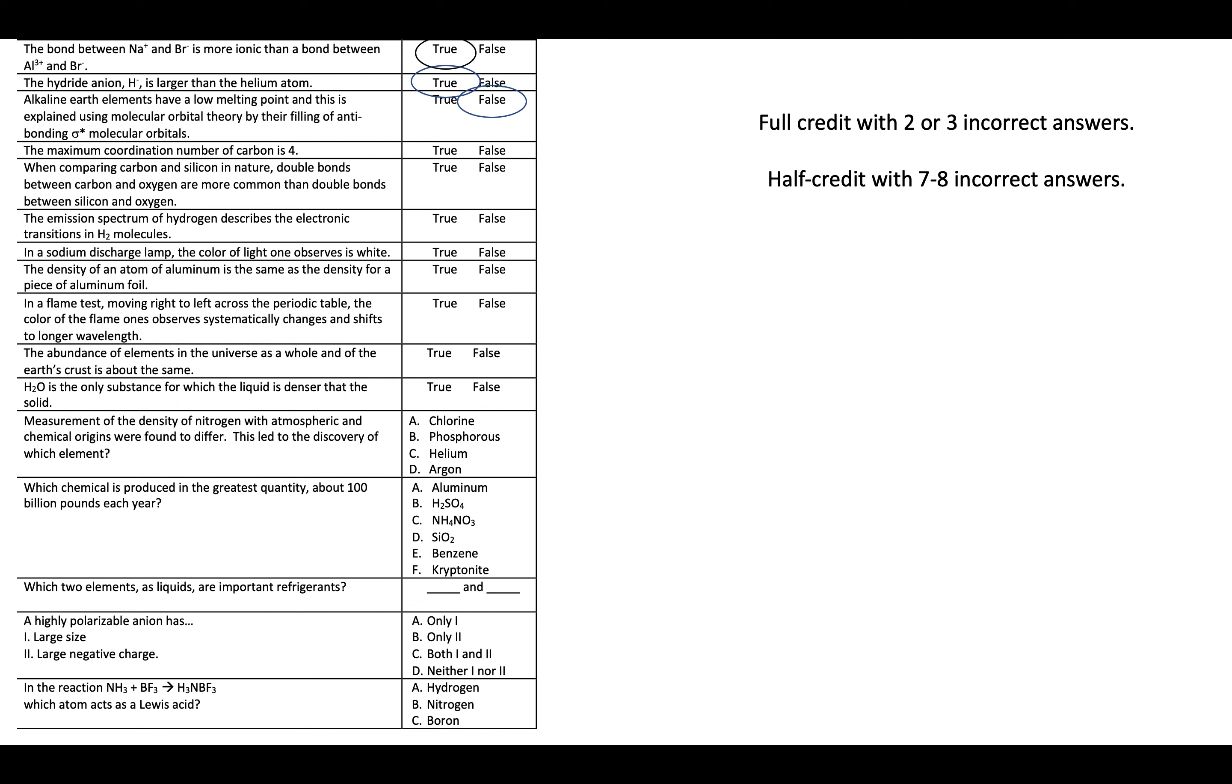So it's incorrect to say that we're filling anti-bonding at that case. Carbon can go beyond a coordination number four. Silicon and carbon, the nature of their structures in double bonds or being more prevalent in the carbon than within the silicon. That's a true statement.